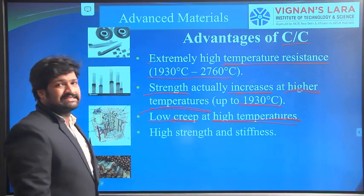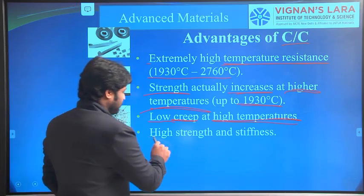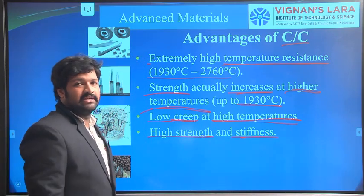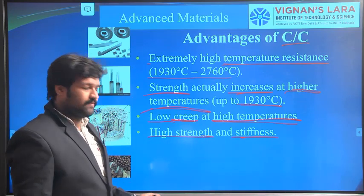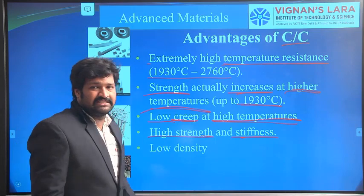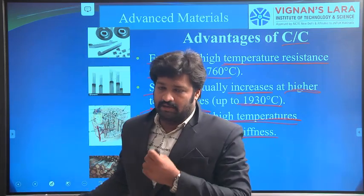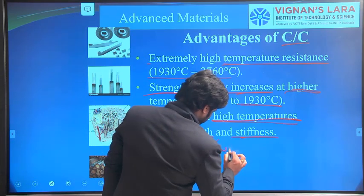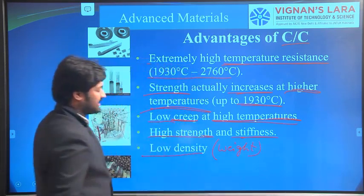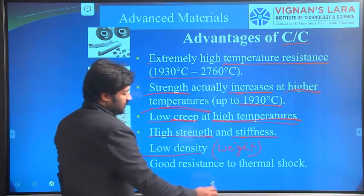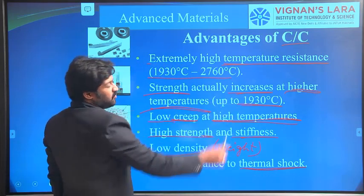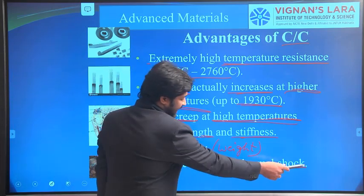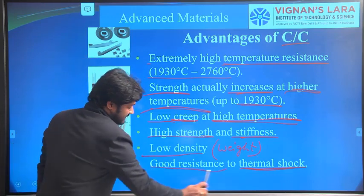Carbon-Carbon Composites have high strength and stiffness, meaning high resistance to deformation relative to their weight. They also have low density — the density of carbon components is very low compared to ceramics and metals, giving them low weight. Additionally, they have good resistance to thermal shock, meaning they can withstand sudden high temperature changes.